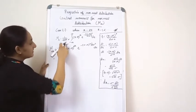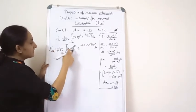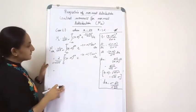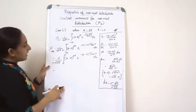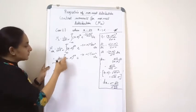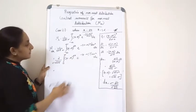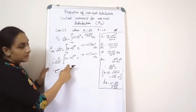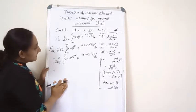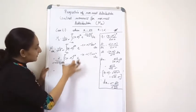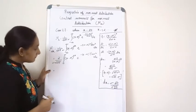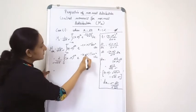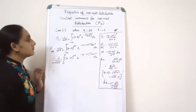The range is minus infinity to infinity. This is an even function in x minus mu. Since the integrand is even, we can write it as 2 times the integral from 0 to infinity. Now, to simplify, instead of x minus mu I am going to substitute t, where t is equal to x minus mu square divided by 2 sigma square.